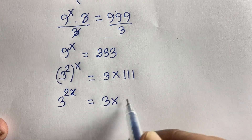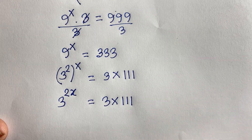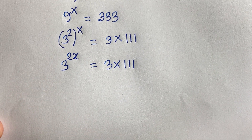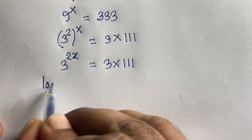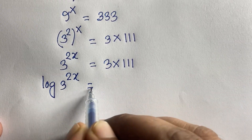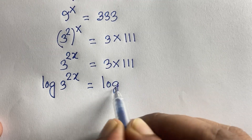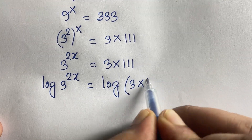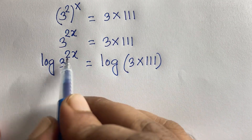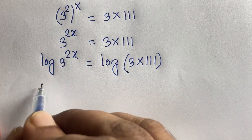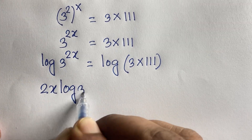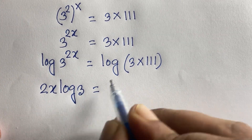Applying logarithm to both sides: log(3^(2x)) = log(3 × 111). Using the exponent rule, the left side becomes 2x · log 3.